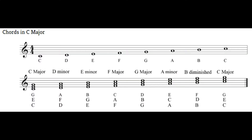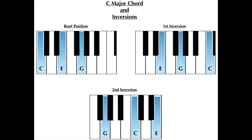This is what it looks like as music notation. Note there are no sharps or flats in this scale. The C major chord can be played different ways — these are known as inversions.